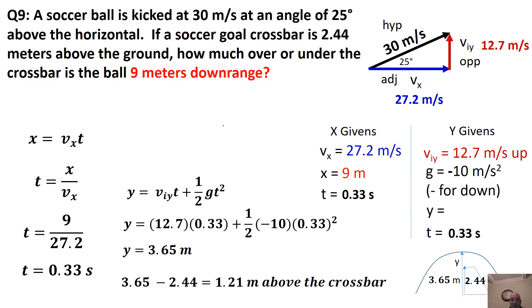That's just an example of how you do some of these problems. There are many different types of angular projectile motion problems — they can give you information about the end point or other conditions. You just have to think through your knowns, remember that VX is going to be constant, and then think about whether there's an assumption you can make based on the way the problem is set up.